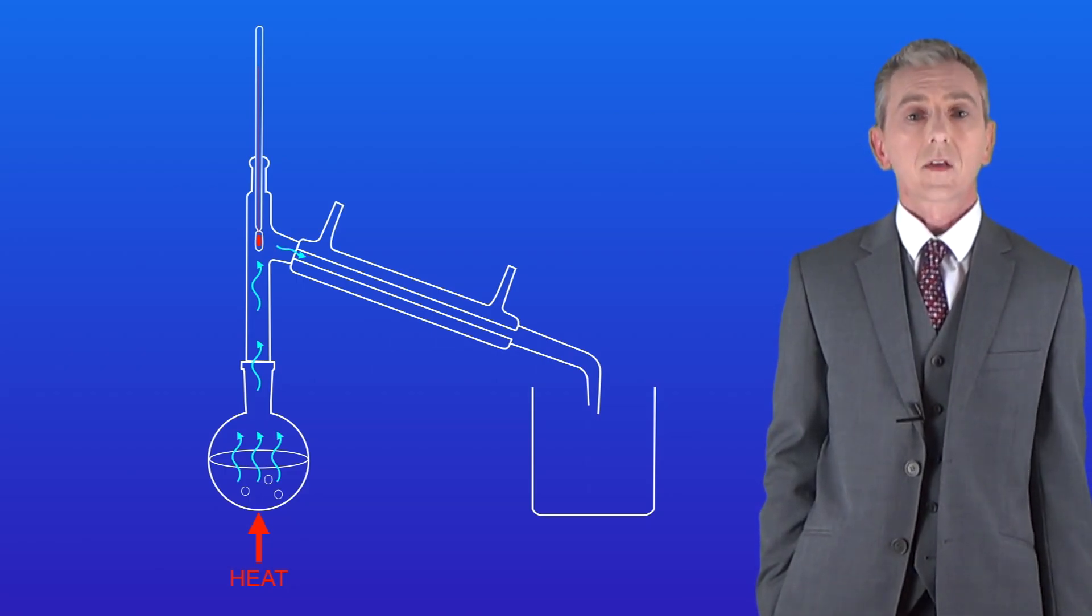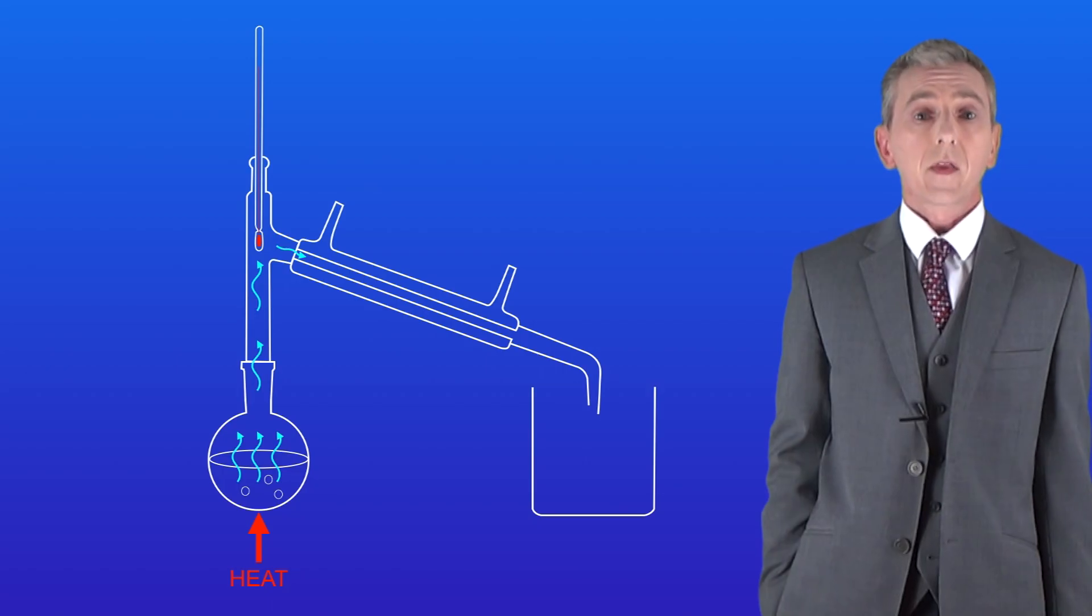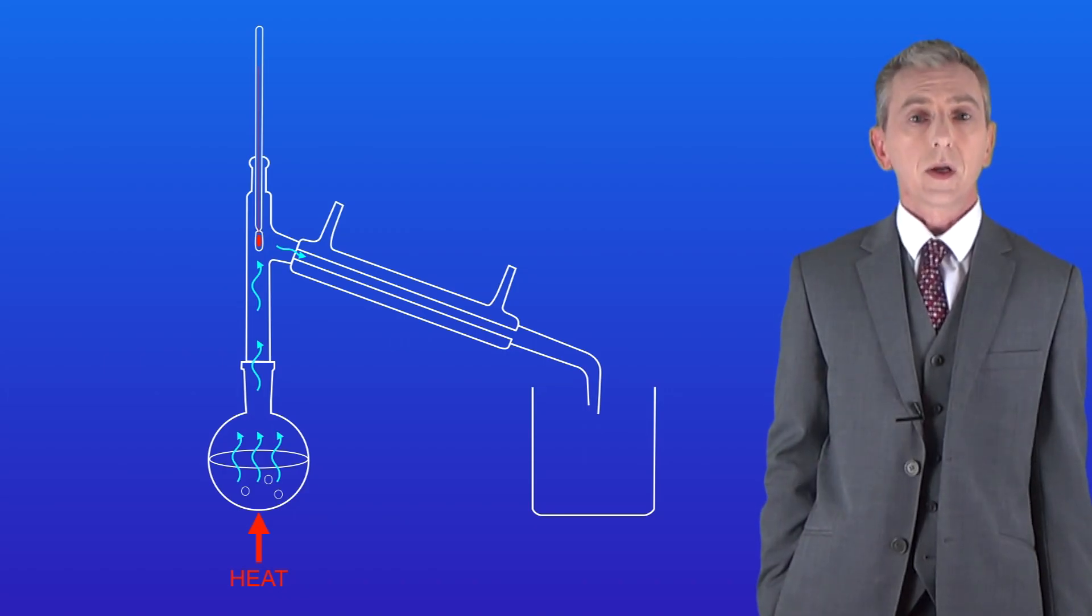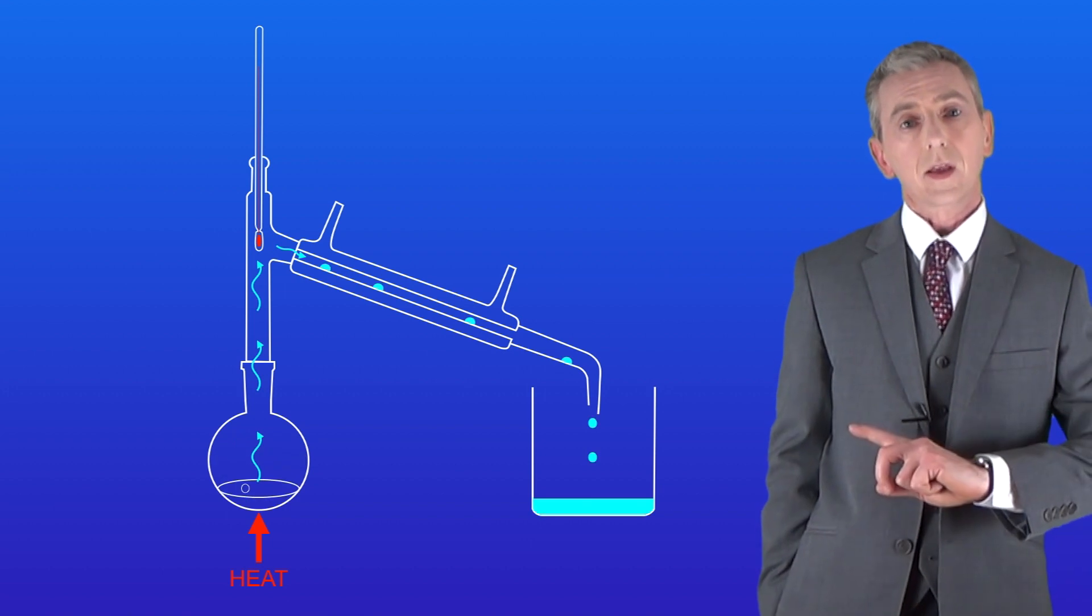The vapor now passes into the condenser. Remember that the condenser is kept cold because we're circulating cold water around it. This means that the vapor now condenses turning back into a liquid as it passes through the condenser like this.